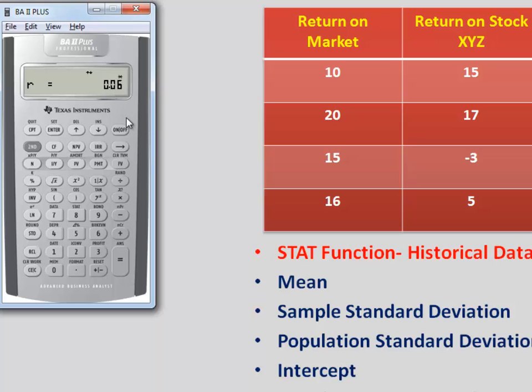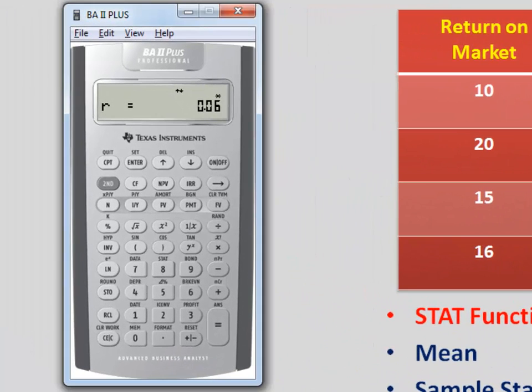and finally what we get is R and R is the correlation coefficient which in this example is 0.06 now let us say the question requires you to calculate the covariance